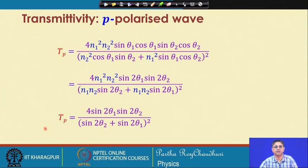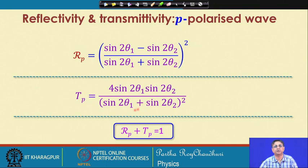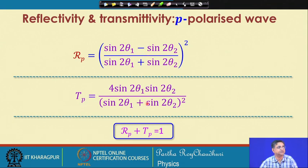We now have both the energy reflection coefficient R_p and energy transmission coefficient T_p — the reflectivity and transmittivity — for the p-polarized wave. When we add them together, R_p + T_p = 1: the squared difference plus 4·sin(2*theta1)·sin(2*theta2) over the same denominator equals 1. This confirms that the total incident energy equals the sum of reflected and transmitted energy — conservation of energy remains valid through the process of reflection and transmission.